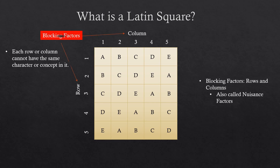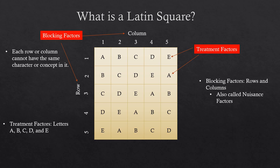Blocking factors are the variables that you are not trying to test. The blocking factors are the variables along the rows and columns. The treatment factor is the factor that you are trying to test. In this example, the treatment factors are the letters in the Latin square.